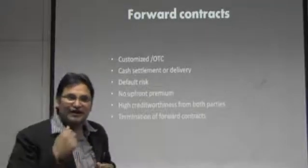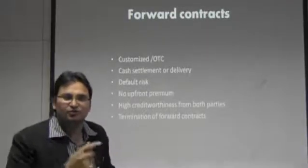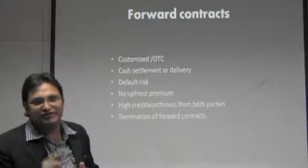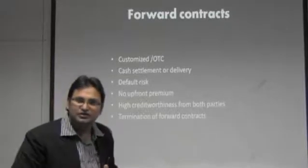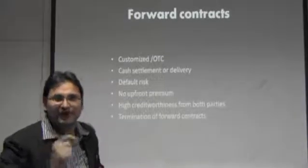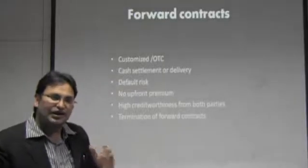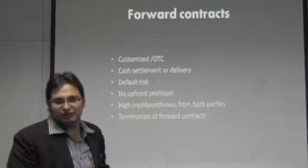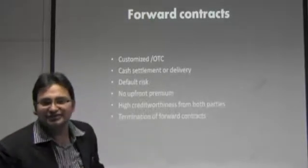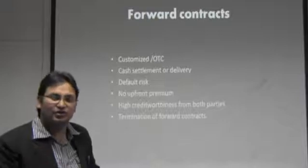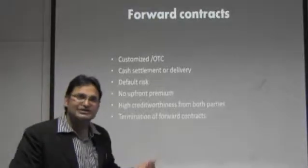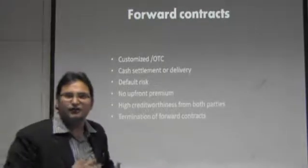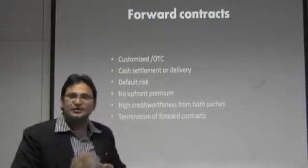In a deliverable settlement, being the seller of the contract, I expect to receive dollars from the US because I have already sent a consignment. After three months I will receive dollars from the US and deliver them to the bank, because I have already entered into a contract. Whether the price goes to 60 or 40, I am indifferent — I will deliver at the pre-decided price of 54 and receive 54 rupees. This is called a deliverable contract.